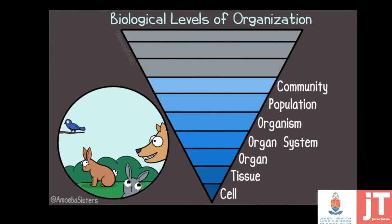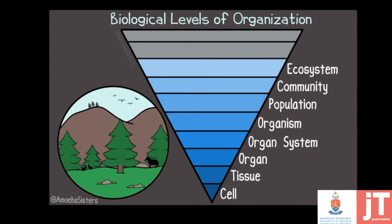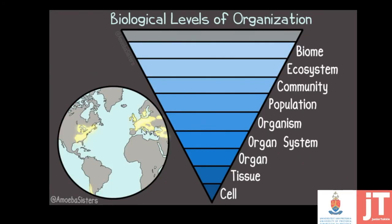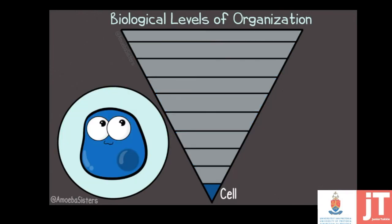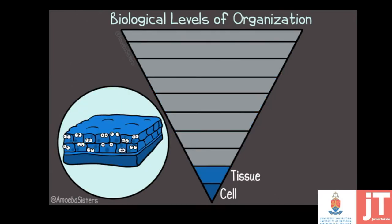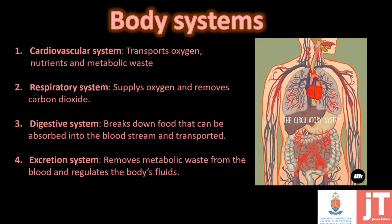Organisms will then form a population, a community, even an ecosystem, and lastly the entire biosphere. So when cells come together to form tissues, it eventually builds a body system.